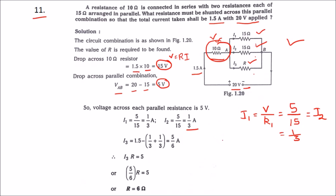Now let us find i3. We know that the total current i = i1 + i2 + i3. Therefore i3 = i minus (i1 + i2).